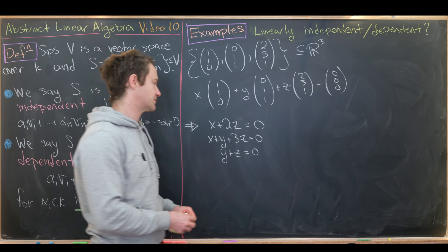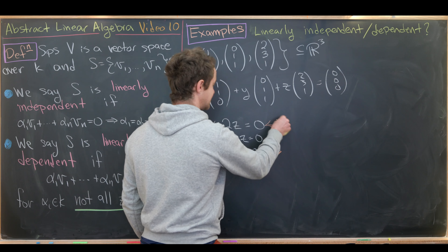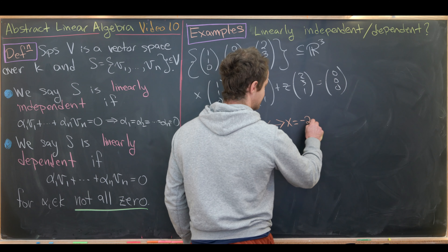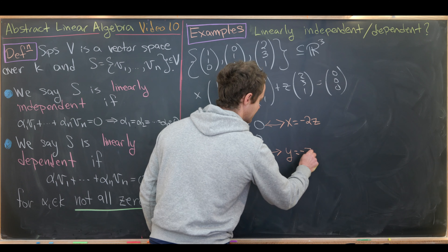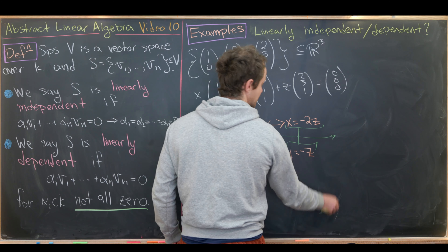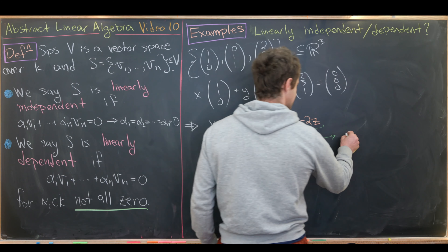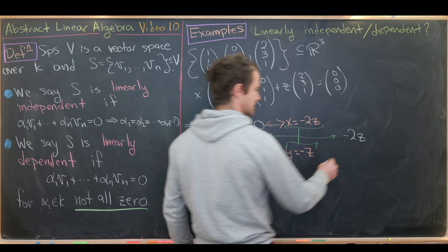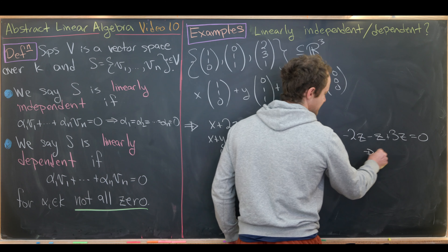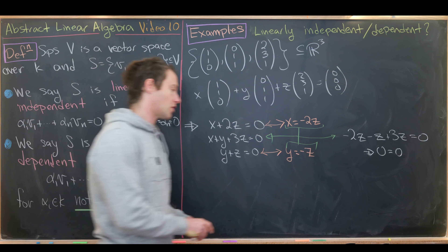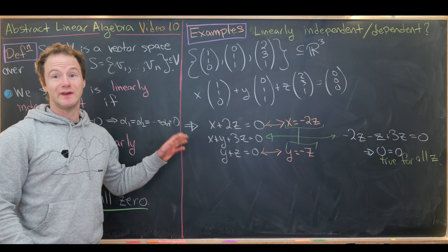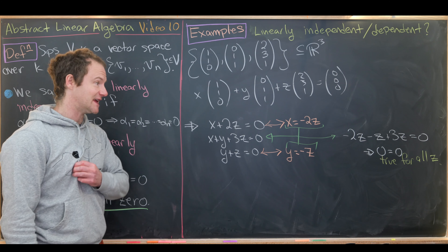Using the first and third equations: x = -2z and y = -z. Substituting into the second equation: -2z + (-z) + 3z = 0, which reduces to 0 = 0 — true for all z. So z is a free variable.